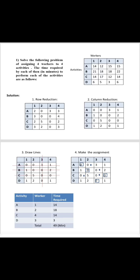Hello everyone, today I am going to discuss a problem on the assignment model. The given question is to solve the problem of assigning four workers to four activities. The matrix shows four activities A, B, C and D and four workers 1, 2, 3 and 4. Our task is to assign these activities to workers so that the assignment is completed in minimum time, using the Hungarian method.